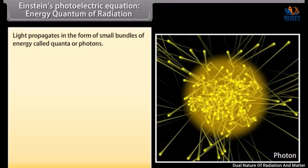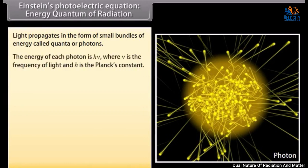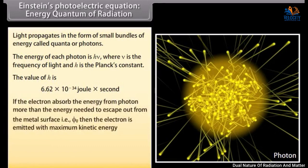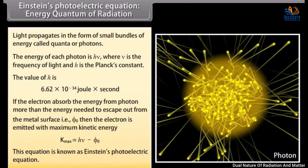Light propagates in the form of small bundles of energy called quanta or photons. The energy of each photon is hν, where ν is the frequency of light and h is Planck's constant, with a value of 6.62 × 10⁻³⁴ joule second. If the electron absorbs energy from a photon greater than the energy needed to escape from the metal surface, that is phi-zero, then the electron is emitted with maximum kinetic energy K-max, which equals hν minus phi-zero. This equation is known as Einstein's photoelectric equation.